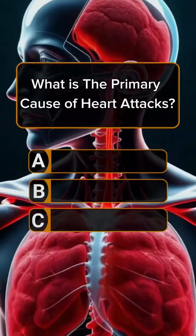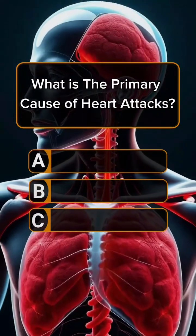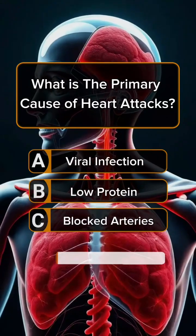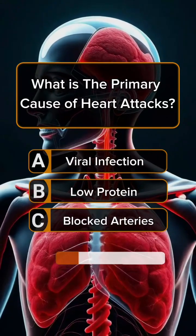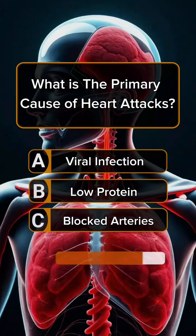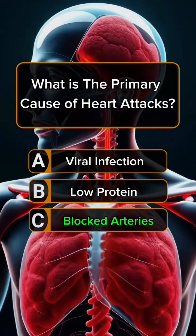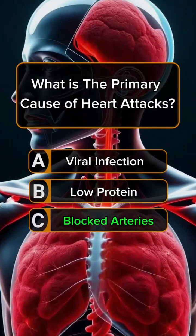Question 9. What is the primary cause of heart attacks? Answer C. Blocked arteries.